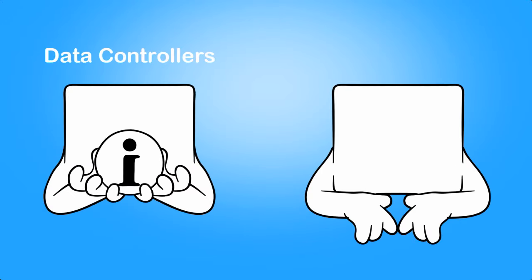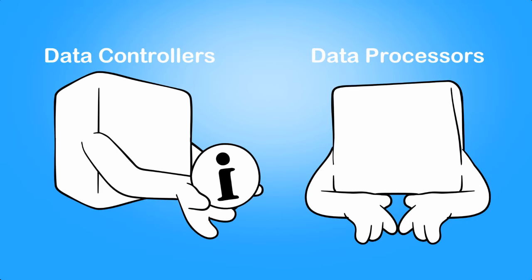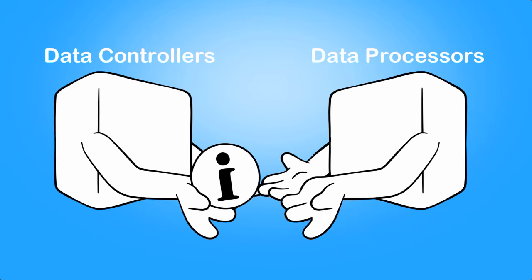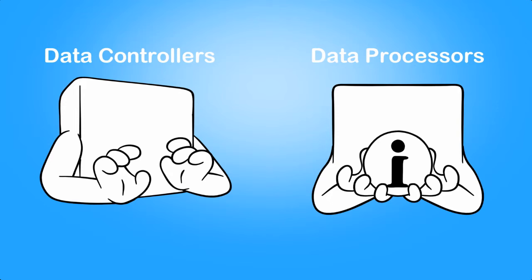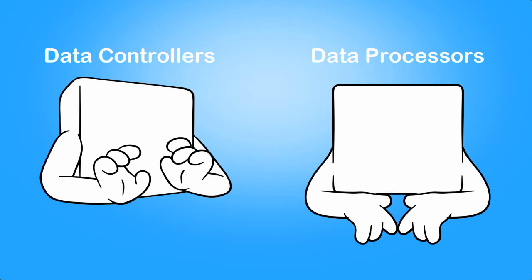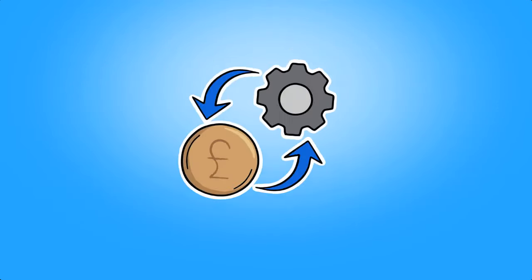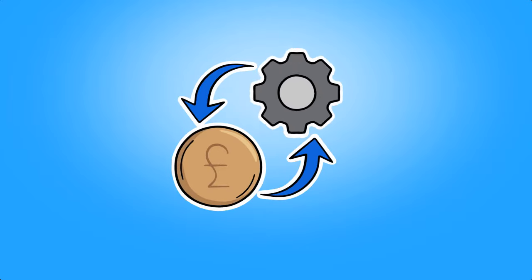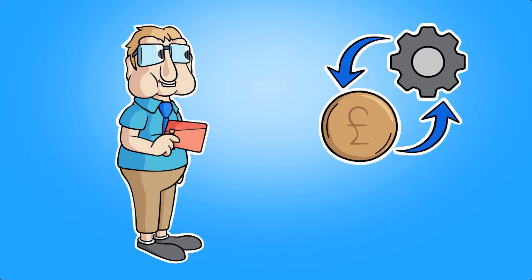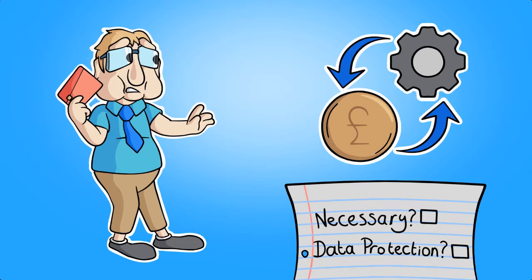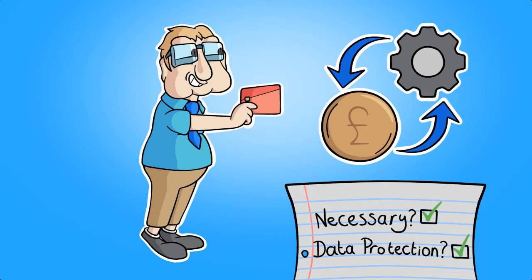Data Controllers often share data with data processors. These are organizations that do something with data provided to them by other companies, but don't collect it themselves. For example, a payment processing company is a data processor. Only share data with processors if it is necessary for a business operation and if you have checked that they have sufficient data protection measures in place.